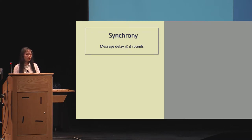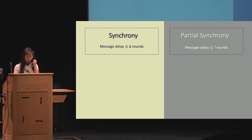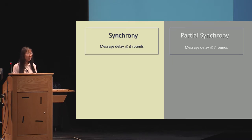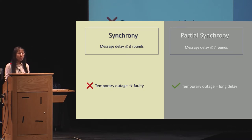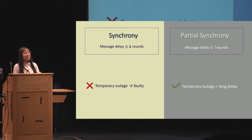This concern is not new, and actually people have a solution for it — another timing model studied for more than 30 years: partial synchrony. In a partially synchronous network, the message delay between honest nodes can be arbitrarily long; there is no upper bound on message delay. So the short-term outage of the Coinbase node would just be considered a long message delay, rather than the node itself being dishonest. Any protocol working in a partially synchronous network inherently tolerates this kind of short-term outage, short-term offline, or network partition.